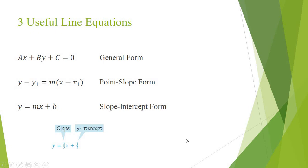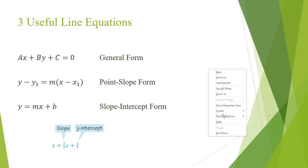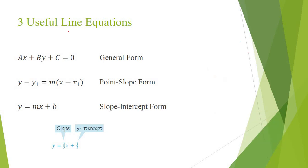So we have three useful line equations. We have form one, which is ax plus by plus c is equal to zero. This is equation one — the general form.